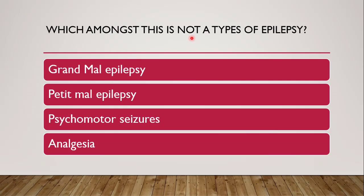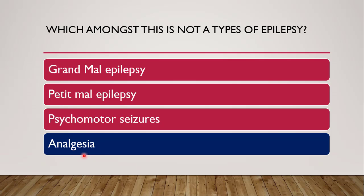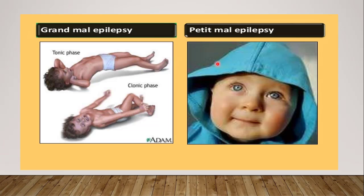Next question: which among these is not a type of epilepsy — grand mal epilepsy, petit mal epilepsy, psychomotor seizure, or analgesia? The correct answer is analgesia. Grand mal epilepsy is a generalized epilepsy also known as tonic clonic seizures — in the tonic phase there is contraction and the body becomes stiff, followed by the clonic phase. Petit mal epilepsy is also known as absent seizures, characterized by a blank expression.